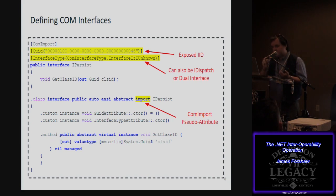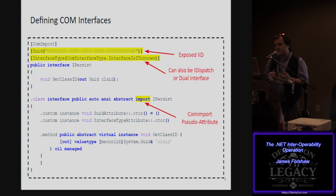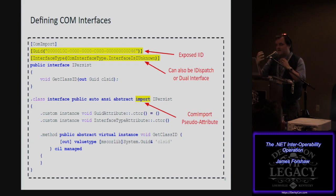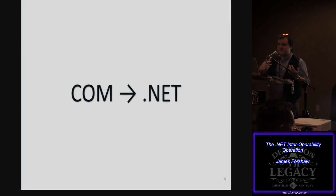When it boils down to IL code, the COM import attribute isn't actually real — it's called a pseudo attribute, which is actually a flag on the class definition. The class definition just has an import. This demonstrates the link between the .NET world and the COM world; they're fairly well entwined because it's codified inside .NET itself.